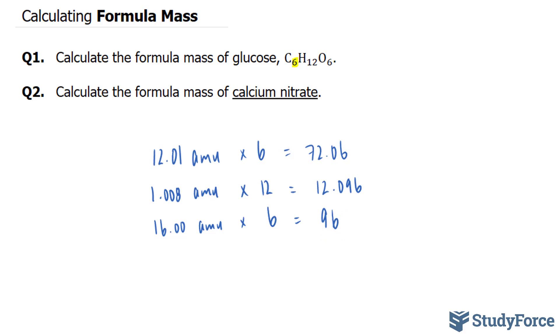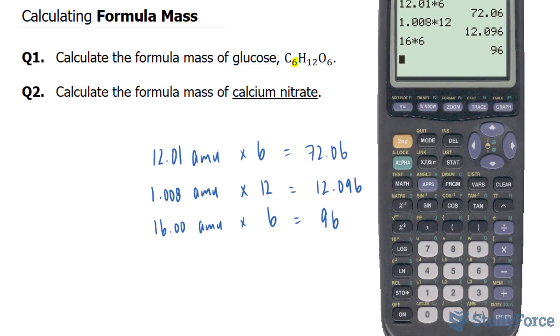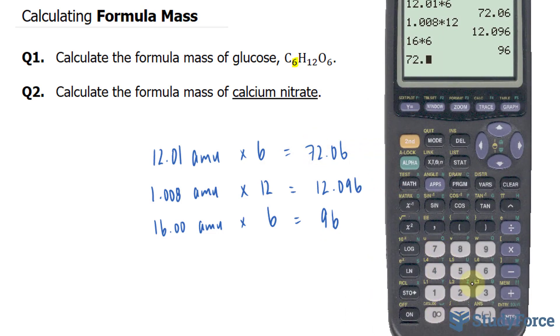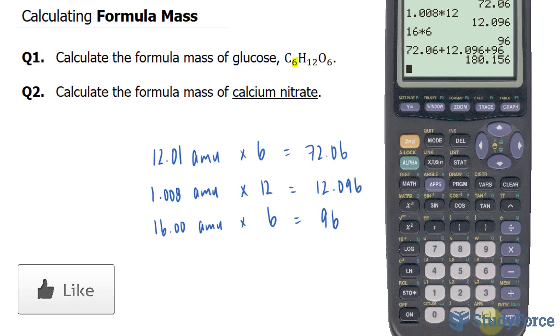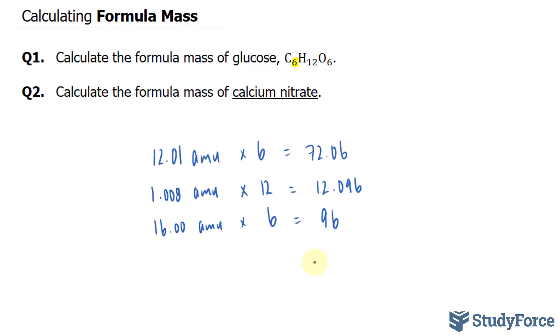I'll go ahead now and add these up. Using my calculator, I have 72.06 plus 12.096 plus 96, and that gives us 180.156. And I'll round this number by increasing the 5 to a 6, where I end up with 180.16.